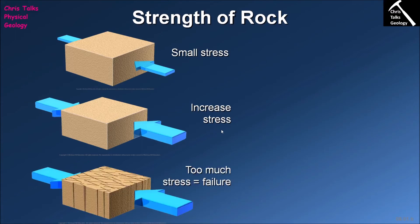If we keep adding even more stress, eventually we will exceed the strength of the rock and it will fail. In geology, this failure can occur in one of two ways. The rock can fail in a brittle fashion — it cracks, like dropping a glass on your kitchen floor and it shatters. The other type is plastic deformation: think of dropping silly putty on the floor — it doesn't break but goes splat and spreads out, it flows. So depending on the physical properties of the rock, once sufficient stress is applied, it will either crack in a brittle fashion or begin to flow in a plastic fashion.